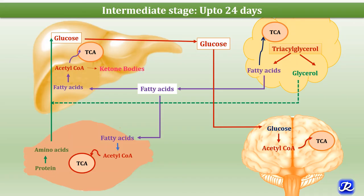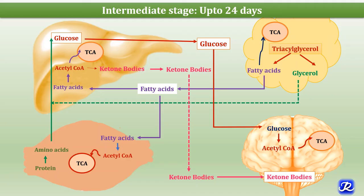Increased ketone body levels in the blood lead to ketosis. These ketone bodies are utilized as fuel by the brain, meeting about a quarter of its energy requirements. Muscles, heart, and kidney can also utilize ketone bodies for energy in the intermediate stage of starvation.